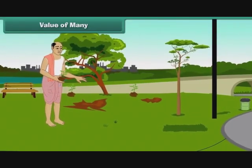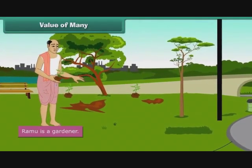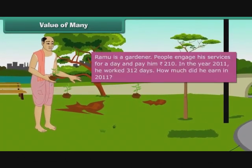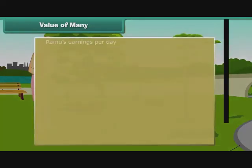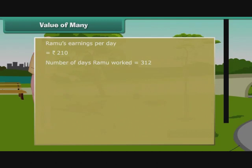Value of Many. Ramu is a gardener. People engage his services and pay him 210 rupees for a day. In the year 2011, he worked for 312 days. How much did he earn in 2011? Ramu's earnings per day is 210 rupees. Number of days Ramu worked is 312. Total amount Ramu earned in 2011 is 210 into 312.